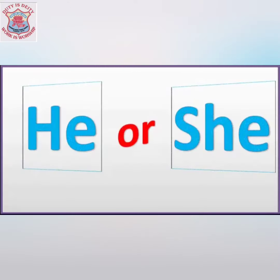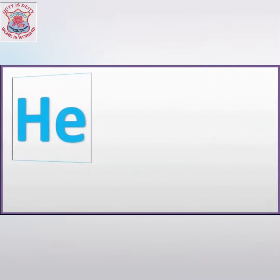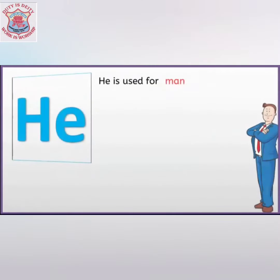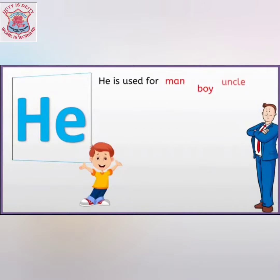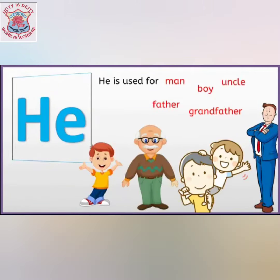So kids, now you have understood how we use he or she. He is used for man, boy, uncle, father, grandfather, brother. They all are male, so we use he for them.